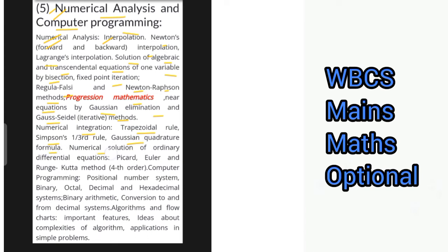Computer programming includes positional number systems including binary, octal, decimal and hexadecimal systems, binary arithmetic, conversion to and from decimal systems, algorithms and flowcharts, important features, and ideas about complexities of algorithms, applications and simple problems.